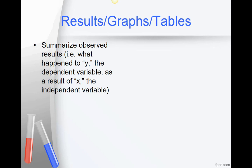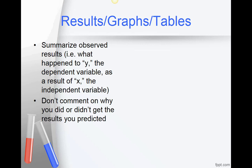In the results section you'll summarize the observed results of your experiment, i.e. what happened to Y, the dependent variable, as a result of X, the independent variable. This is not the time to comment on why you did or didn't get the results you predicted. Save that for the discussion conclusion section.